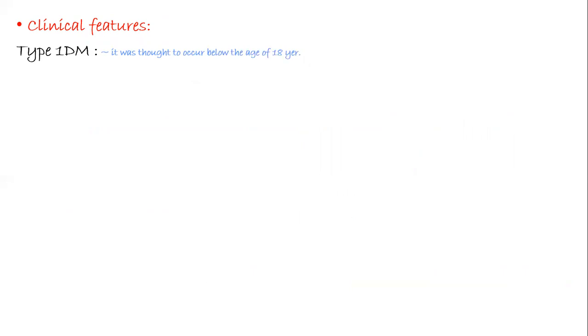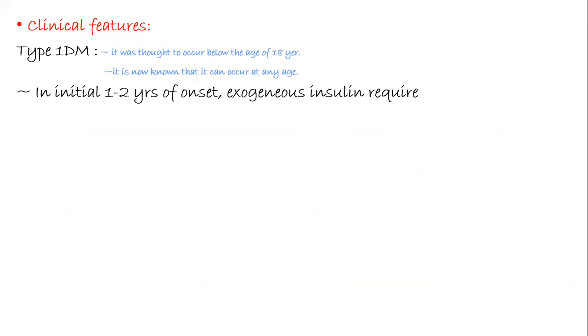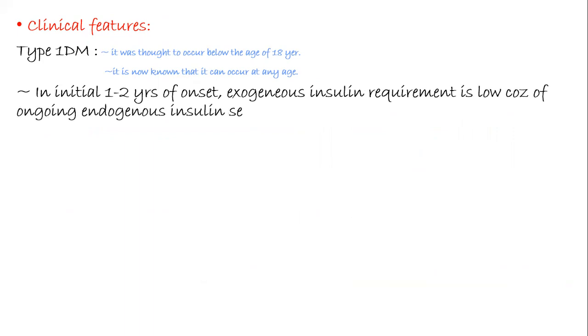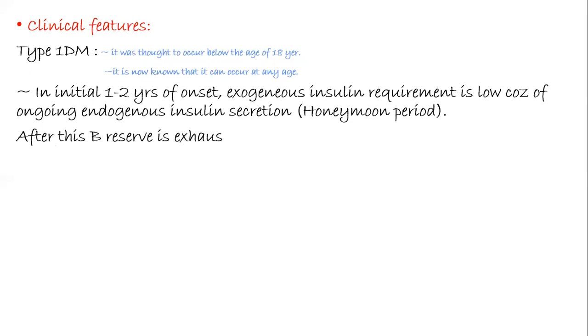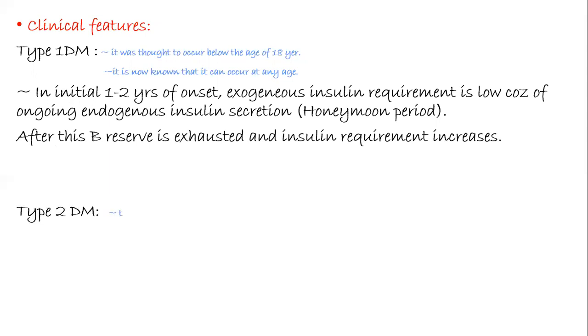Now we'll see clinical features. Type 1 diabetes mellitus was thought to occur below the age of 18 years, but we now know it can occur at any age. In the initial 1 to 2 years of onset, exogenous insulin requirement is very low due to ongoing endogenous insulin secretion — this period is called the honeymoon period. After this, the beta reserve is exhausted and insulin requirement increases. Type 2 diabetes patients are typically older than 40 years and obese, but due to sedentary lifestyle and poor activity levels, it is also seen in children and adolescents. A person with type 2 diabetes may live a normal life for up to 10 years before experiencing any symptoms.